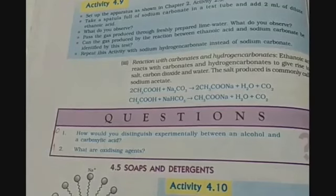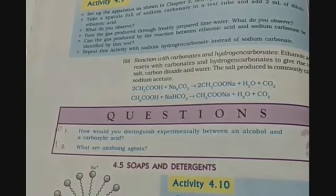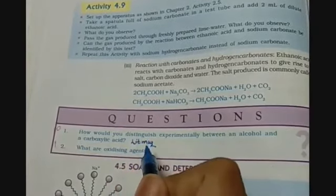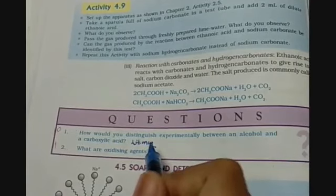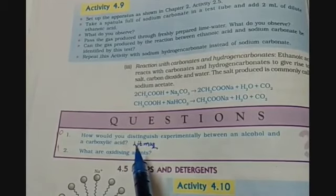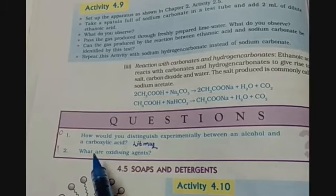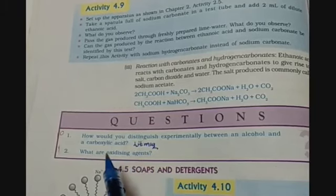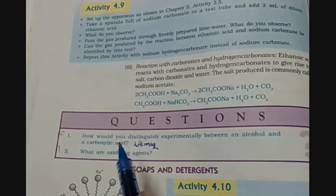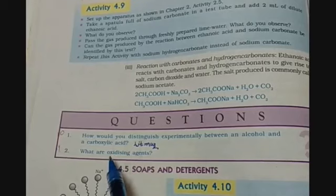The next question is: how would you distinguish experimentally between alcohol and a carboxylic acid? One test is the litmus paper test — alcohol is neutral in nature while carboxylic acid is acidic in nature. Litmus paper will not change color when reacting with alcohol, but blue litmus paper will turn red when dipped in carboxylic acid because of its acidic nature. Oxidizing agents are substances which oxidize other substances by providing oxygen or removing hydrogen from a compound.